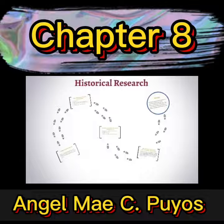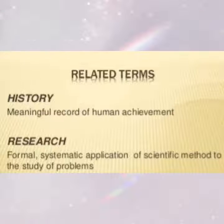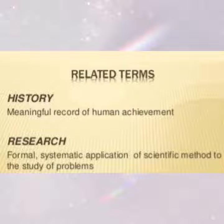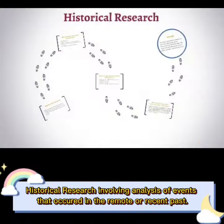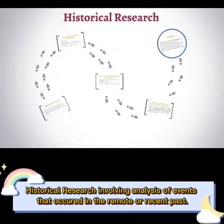Chapter 8: Historical Research. History is a meaningful record of human achievement. Research is the formal, systematic application of scientific method to the study of problems. Historical research involves the analysis of events that occurred in the remote or recent past.